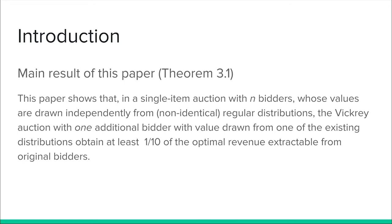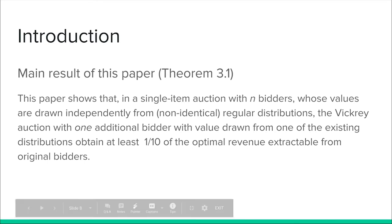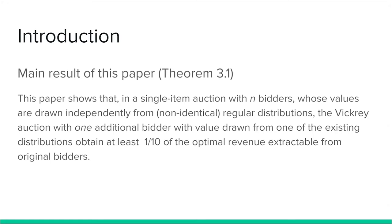The main result of this paper is to relax Bulow and Klemperer's theorem to the more general setting of Hartline and Roughgarden — that is, n bidders can draw from n different probability distributions with some constant loss of optimality. The main result shows that in a single-item auction with n bidders whose values are drawn independently from n distributions, we can find one bidder upon duplicating whom we get a constant fraction of the optimal revenue. I will now show the intuition behind the proof: first we derive a loose bound of 1/40 of the optimal revenue, then parameterize to get the desired bound of 1/10.